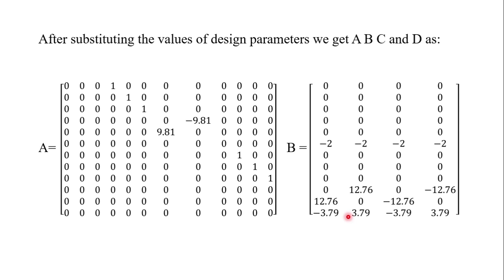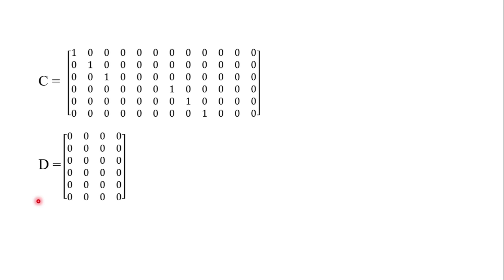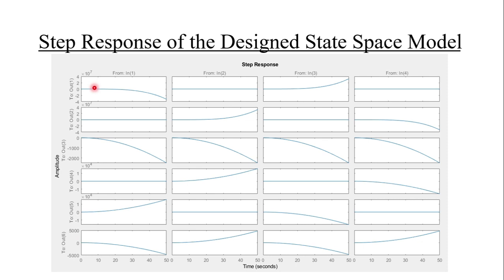After substituting the design parameter values, we obtain the A, B, C, and D matrices. To get the step response in MATLAB, we first define the A, B, C, D matrices, then define the state space model using the command ss(A, B, C, D), and finally use the step() command on that variable.